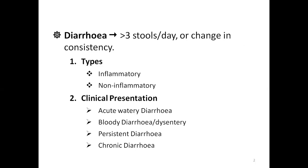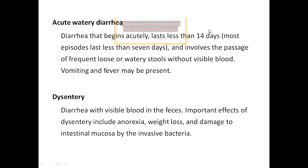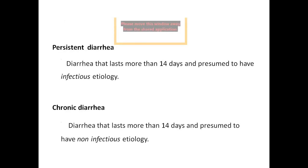Based on clinical presentation, it is acute diarrhea, dysentery, persistent, and chronic diarrhea. Acute diarrhea is less than 14 days and there is no visible blood. Whereas in dysentery you have visible blood in the feces and it is mostly associated with anorexia, weight loss, and damage.